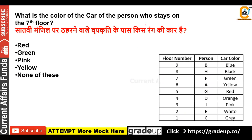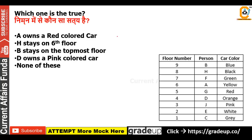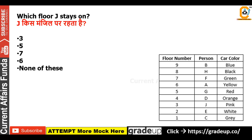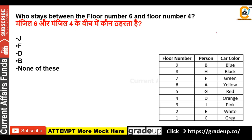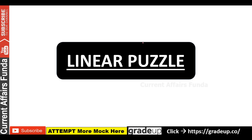First question: what is the color of the car of the person who stays on the 7th floor? The answer is green color — so option B is the correct answer. Next: which statement is true? A's car is red — no, A's car is yellow. H is on floor 6 — no, H is on floor 8. B is at the top — yes, so the 3rd option is correct. For J's floor: J is on floor 6, with floor 5 having red — the answer is none of these.